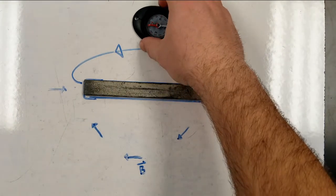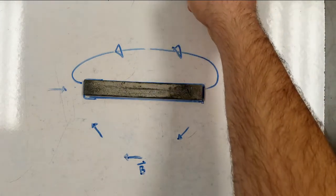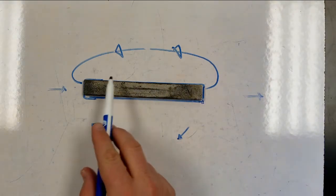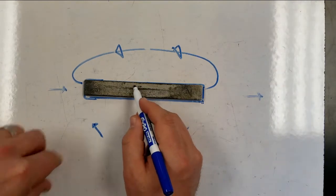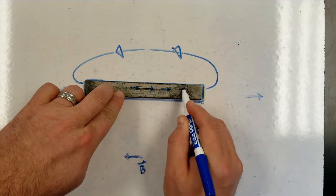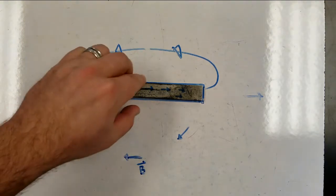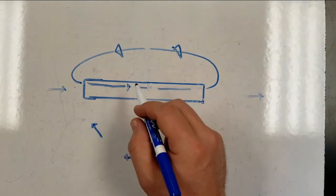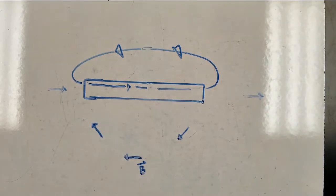Now, if I were to take my compass and put it inside the magnet — which I can't really do without melting it — we would notice the compass would just line up with the rest of the magnet. You can think of this magnet as being a bunch of little magnets all pointed in the same direction. So the magnetic field inside the magnet simply closes off those loops. The magnetic field around a magnet always forms closed loops.